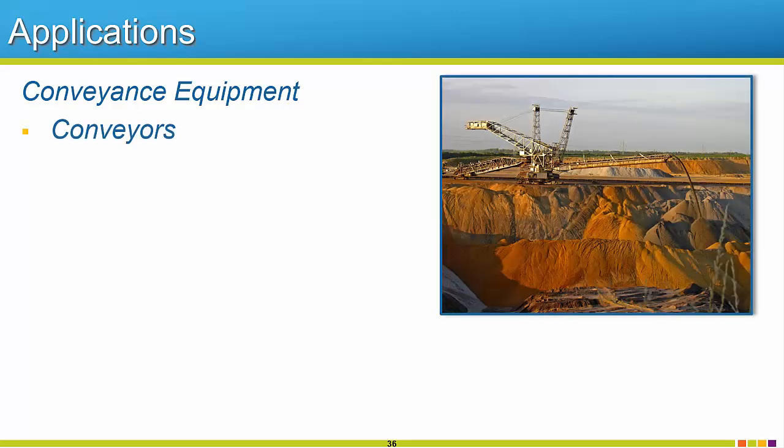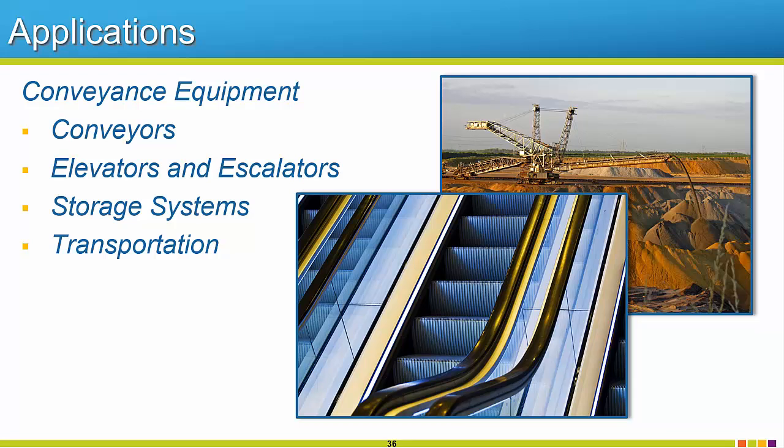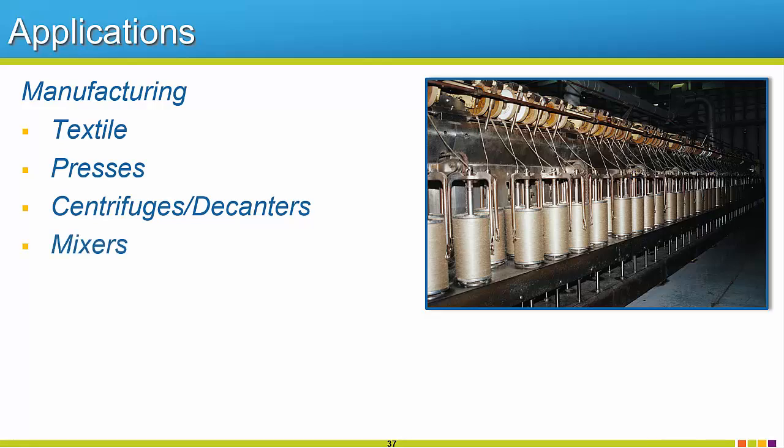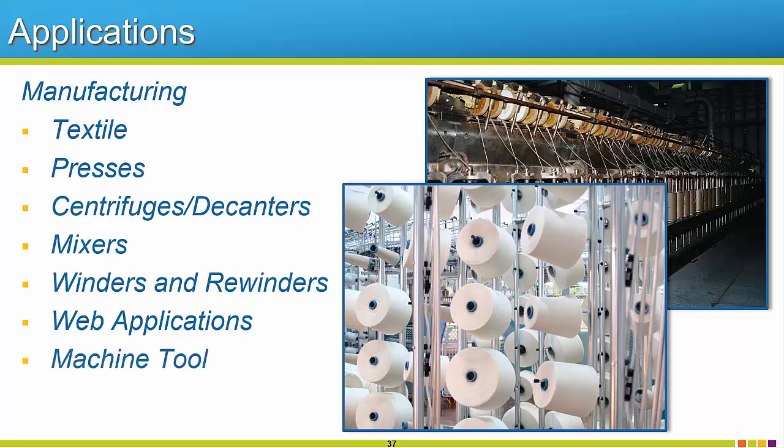The R1000 can be applied to many different applications on conveyance equipment. This includes conveyors, elevators and escalators, storage units, and also transportation. Additionally, there are a number of manufacturing applications that apply. Textile, presses, centrifuges and decanters, mixers, winders and rewinders, web applications, machine tool, and many more.